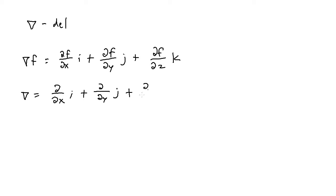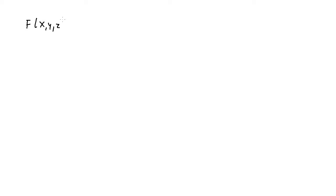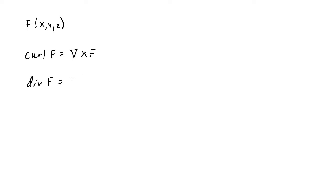The formula for the gradient vector is the partial derivative of the function with respect to x times i, plus the partial with respect to y times j, plus the partial with respect to z times k. The formula for del by itself removes f from that expression. Given a vector field F of three variables x, y, and z, the curl of F equals the cross product of del and F, and the divergence of F equals the dot product of del and F.